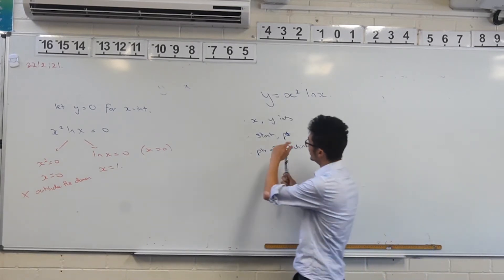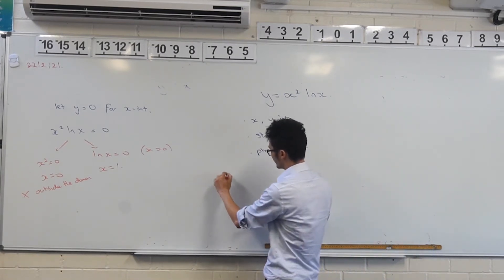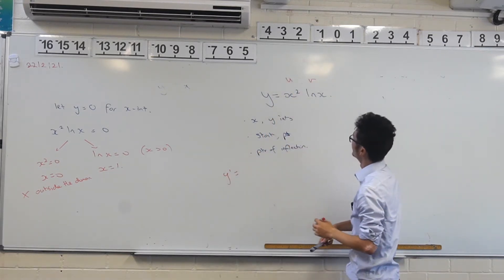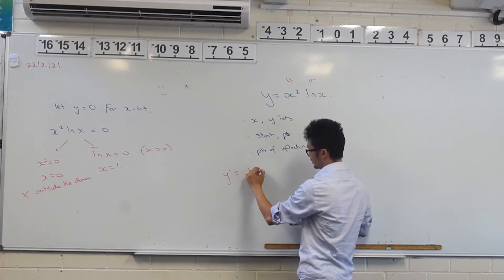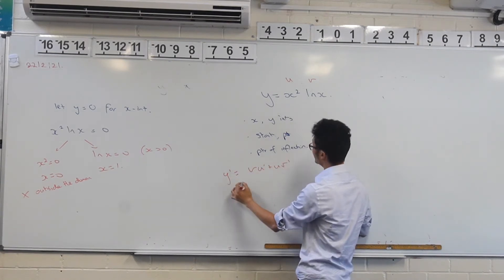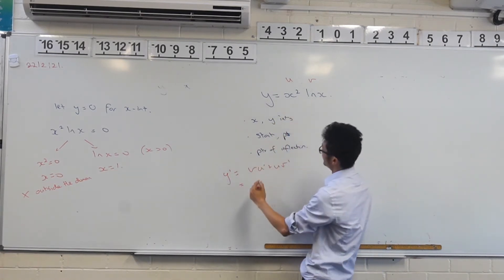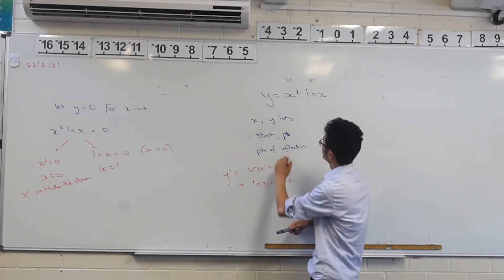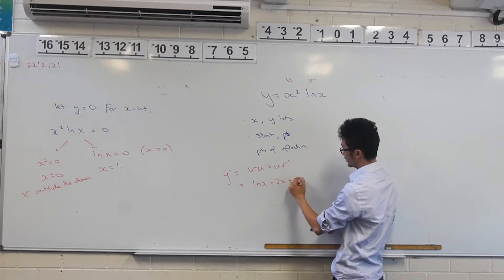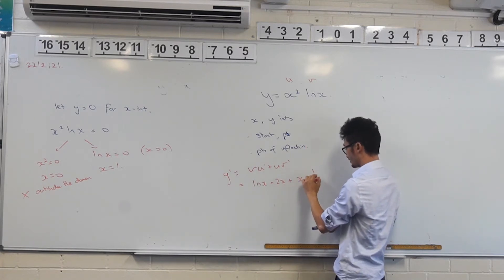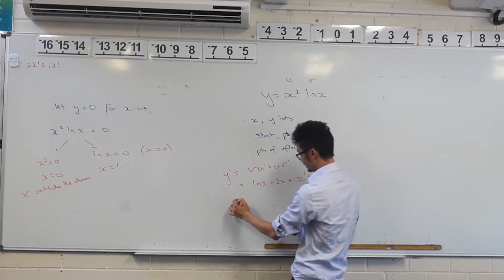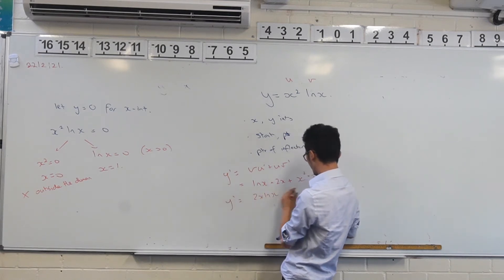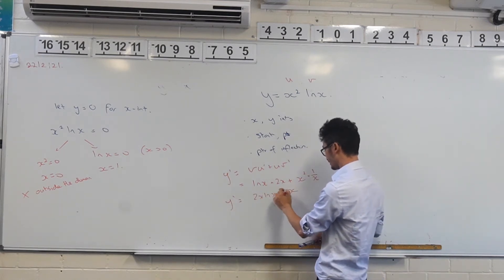So we'll take the derivative. This one, we'll have to do a bit of work. I have to use product rule here. We can just do that really quickly. So we want v u dash plus u v dash. And so that's going to be ln of x times 2x plus x squared times the derivative. This is 1 over x. So that gives me 2x ln of x. And this is going to be x here.